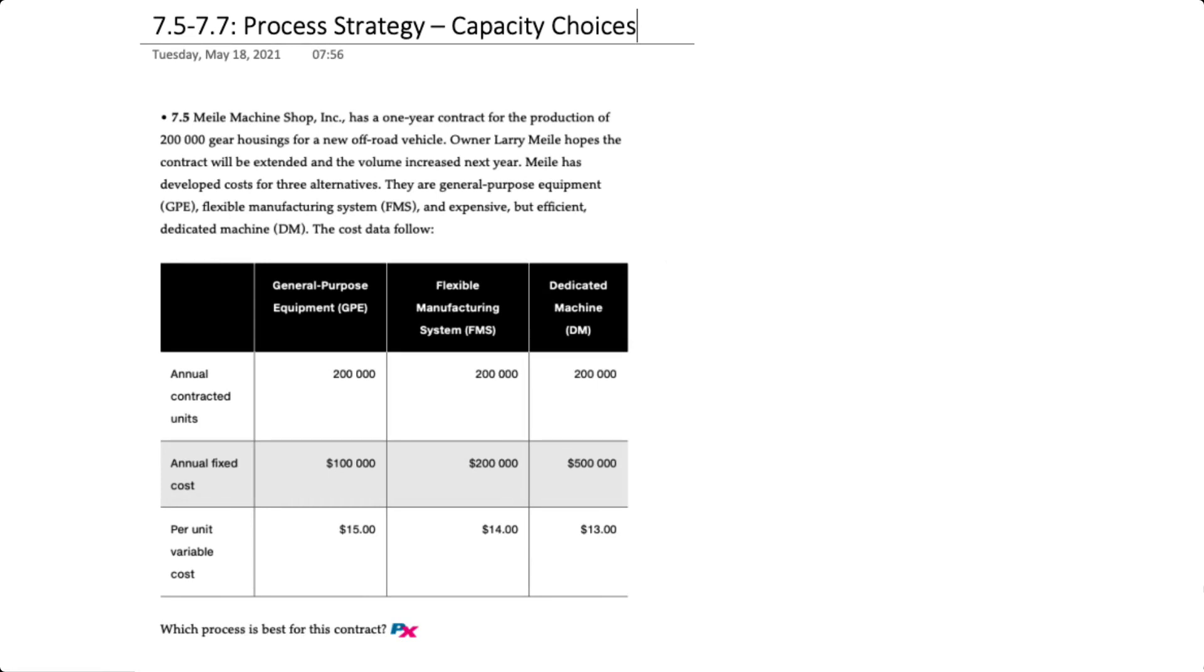This question relates to problems 7.5 through 7.7 in your text. Here we have a machine shop that has a one-year contract for the production of 200,000 gear housings for an off-road vehicle. The owner hopes the contract will be extended and the volume will increase next year. The company has developed three different cost alternatives for manufacturing.